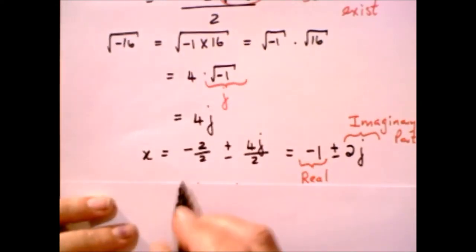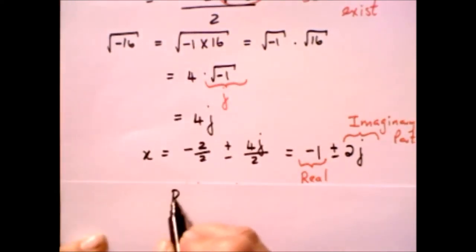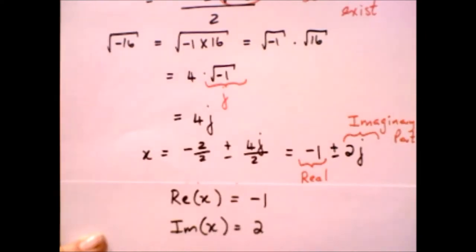In terms of notation, we would write this as the real part of x is minus 1 and the imaginary part of x is 2.